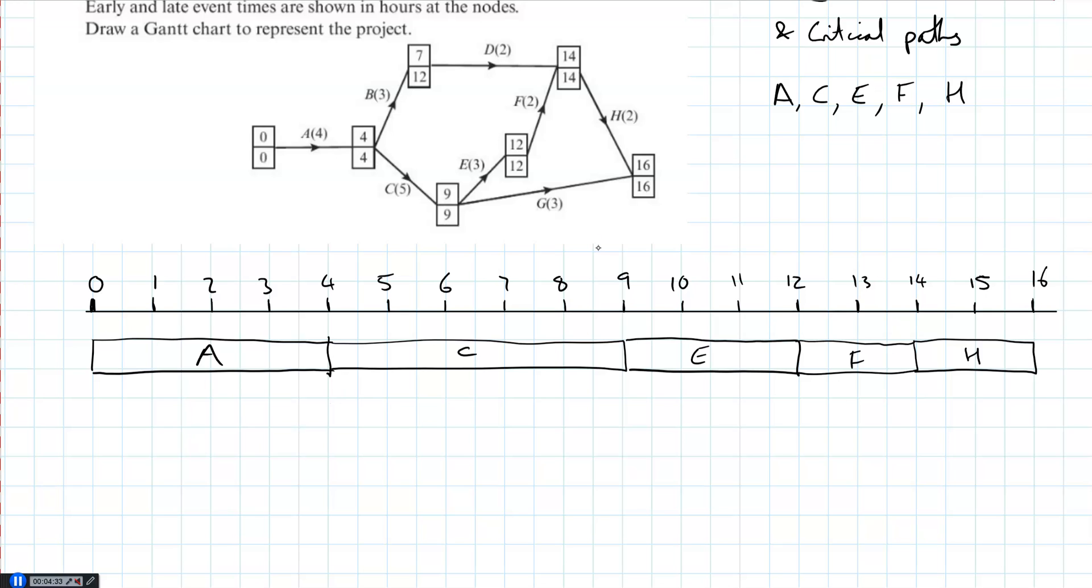On our Gantt chart, we then need to include every single activity, and every single activity that is not a critical activity gets its own row, and starts - we normally do this, you have to read the question carefully - but normally you start at the earliest start time. Sometimes it'll say so it finishes as late as possible, but most of the time it's as early as possible. So let's look at our first non-critical activity, which is B.